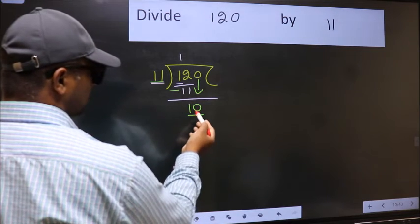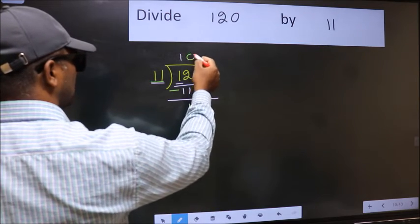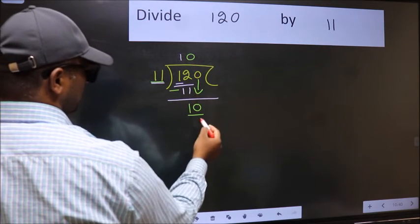But 11 is larger than 10. So what we should do is, we should take 0. So 11 into 0, 0.